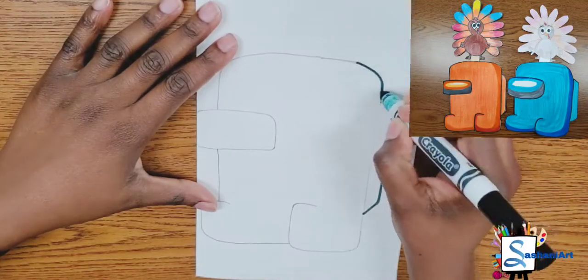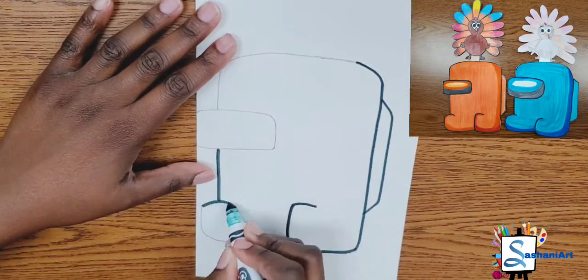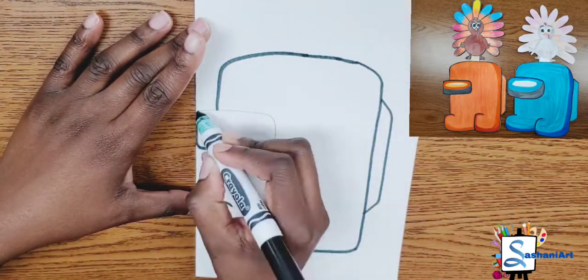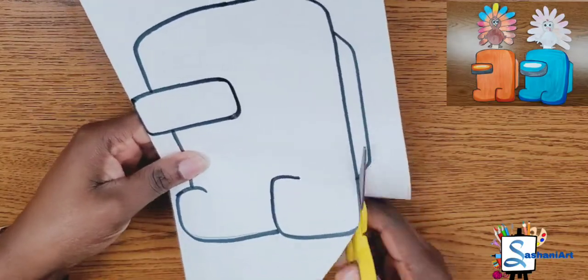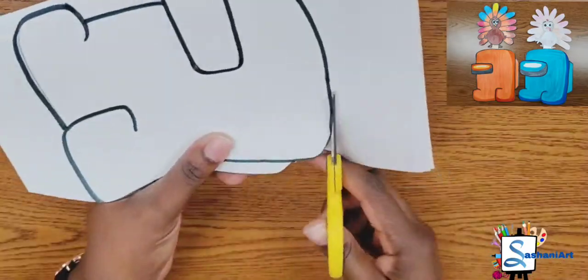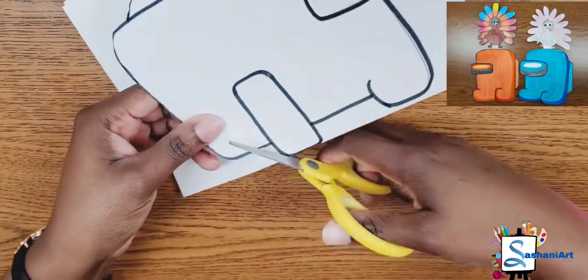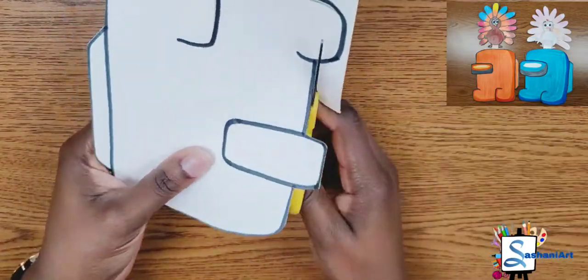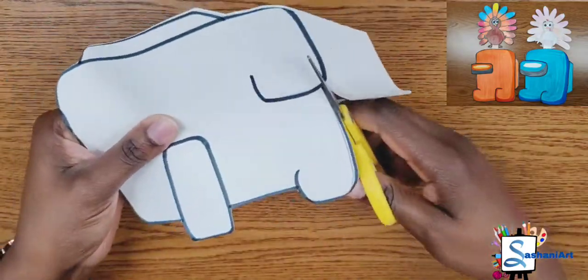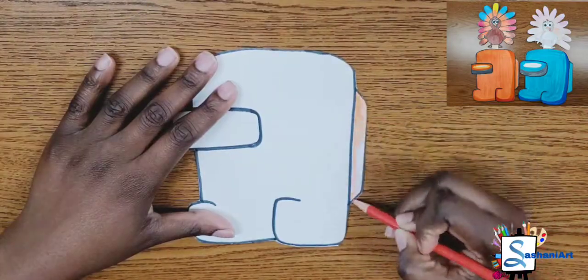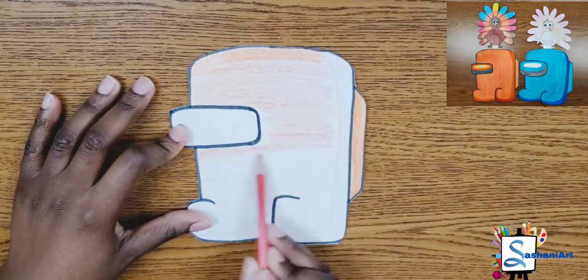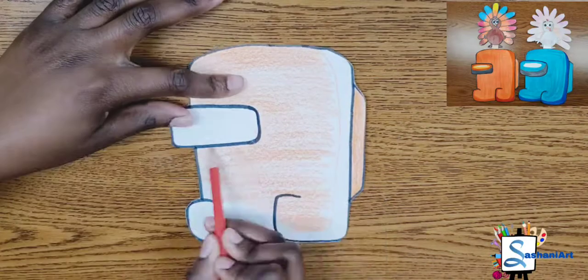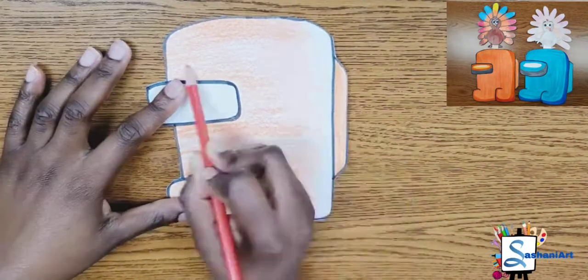Now that we are finished drawing our Among Us character, we're going to use our marker to trace it so that it can be a bit brighter. Then you're going to cut out your character. Make sure you hold both papers together because you want it to be able to open like a book. Then you can select the color that you want your Among Us character to be and start coloring.